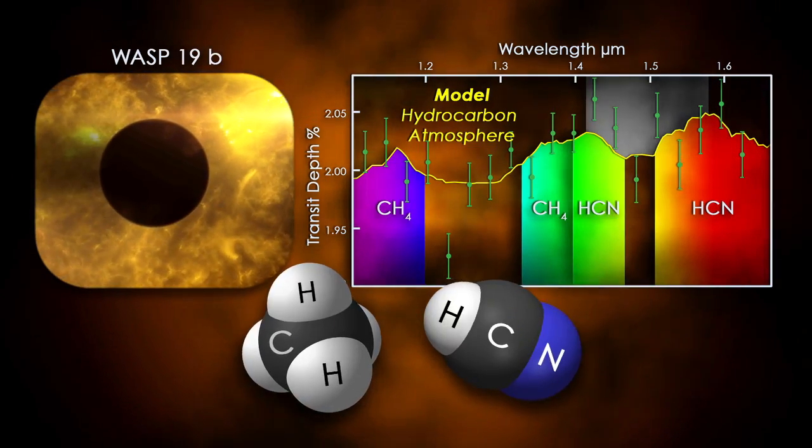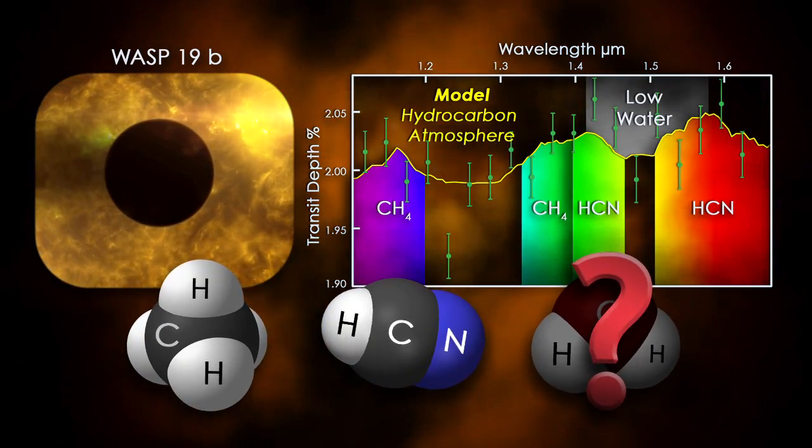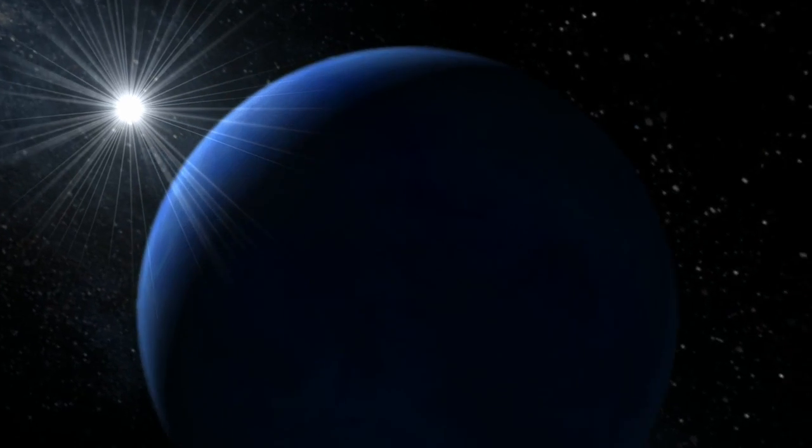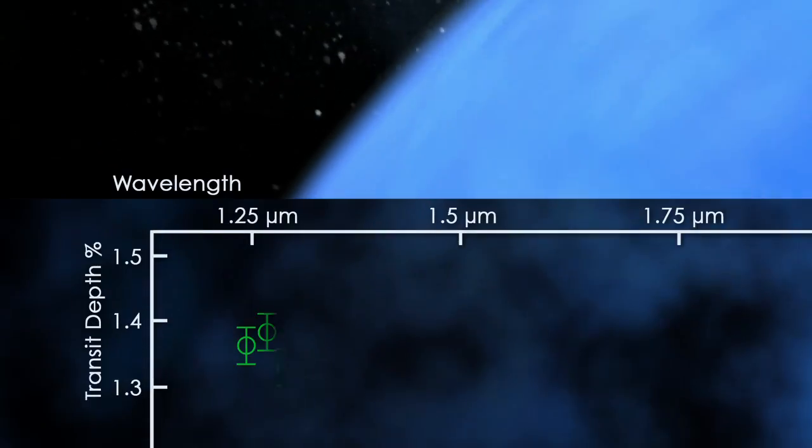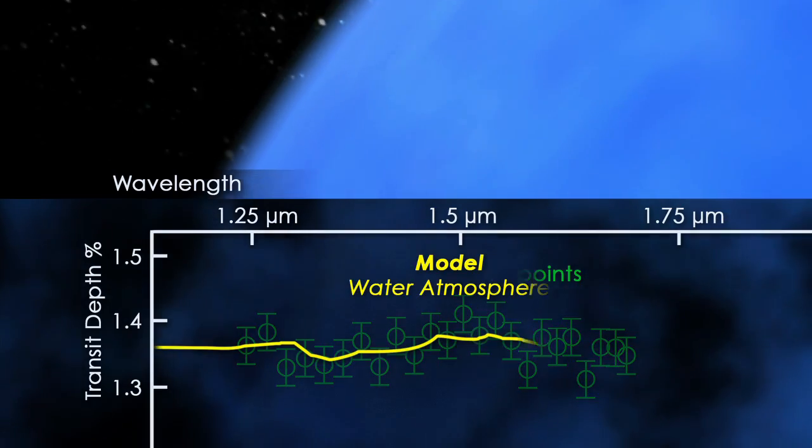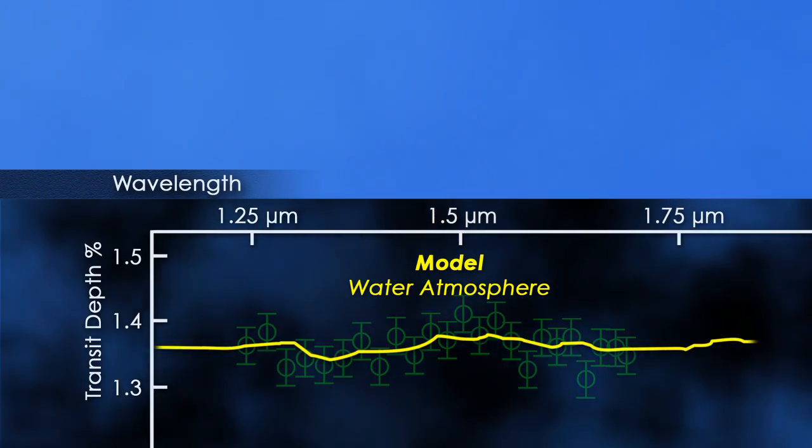By contrast, planet Gliese 1214 b is a comparatively inviting water world. Its nearly flat transit depth curve hints at a shallow atmosphere of pure steam enveloping an ocean thousands of kilometers deep,